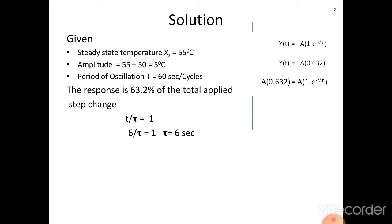Now we know tau, the steady state value, and the magnitude. For sinusoidal input, the sinusoidal output response equation is: Y(t) = A / √(1 + (ωτ)²) × sin(ωt + φ). The amplitude ratio AR is calculated as AR = 1 / √(1 + (ωτ)²). Here tau is known but omega is not, so the radian frequency ω = 2πf = 2π/T. With T = 60 seconds, ω is calculated as approximately 0.1 radians per second. The amplitude ratio is then calculated as 0.85.